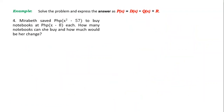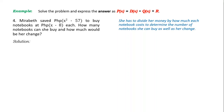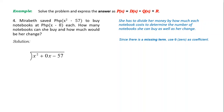Sample number 4. Mirabeth saved x² − 57 pesos to buy notebooks at x − 8 pesos each. How many notebooks can she buy and how much would be her change? Solution: she has to divide her money by how much each notebook costs. Since there is a missing term, use 0 as the coefficient — the dividend becomes x² + 0x − 57.